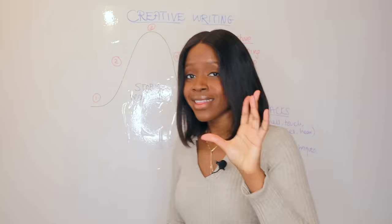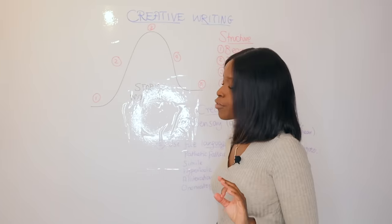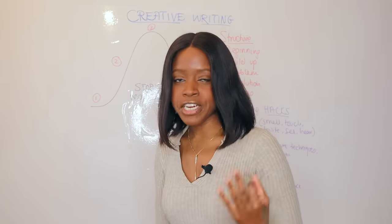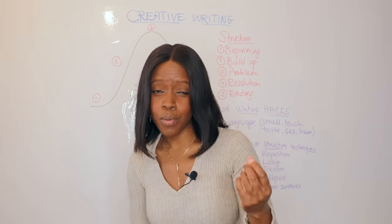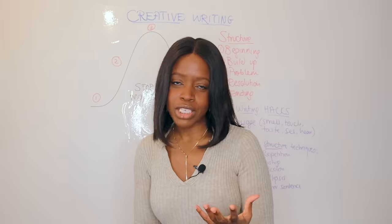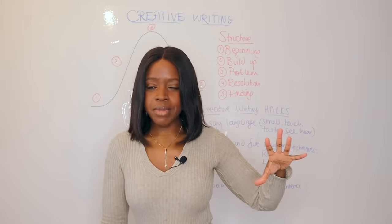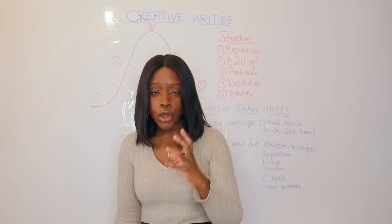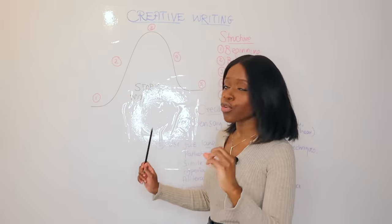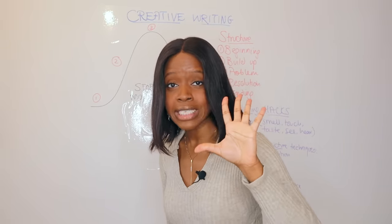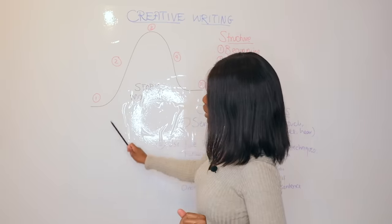What I want to first offer you is a framework to adopt for every single creative writing story. This framework is the Story Mountain framework, also known as Freytag's Pyramid. Lots of you have probably heard about it from primary school. I'd like to suggest going back to basics and using that framework — specifically, seeing your creative writing story as split up into five separate paragraphs or five separate sections.